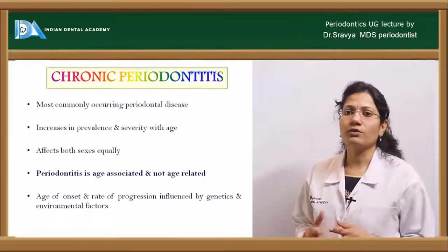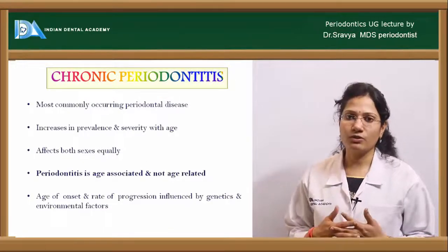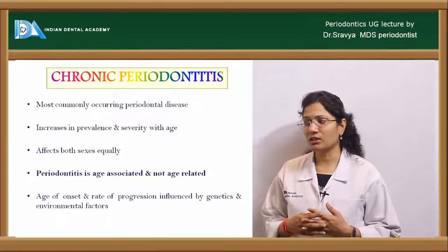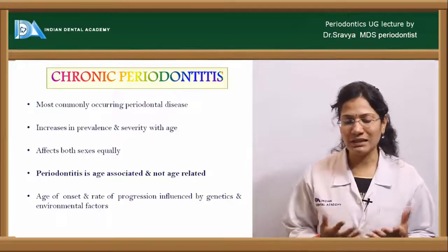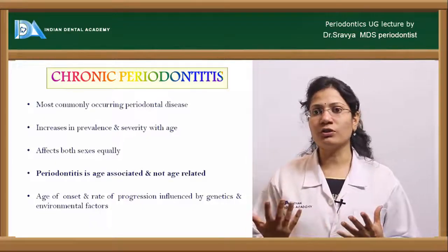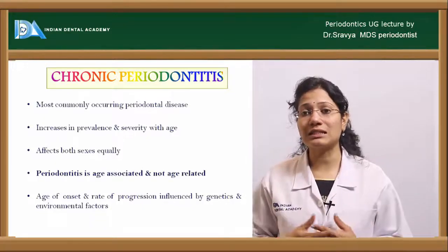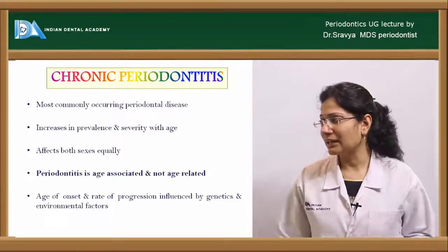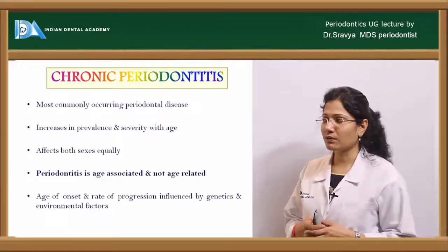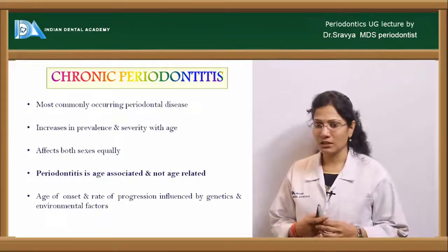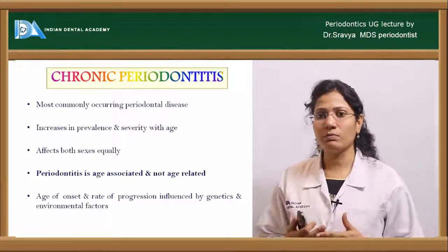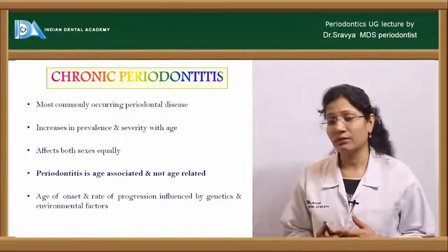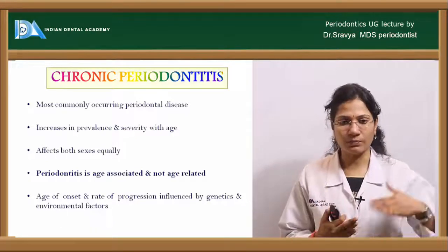Chronic periodontitis is one of the most prevalent forms of periodontal diseases, affecting at least 40 to 50 percent or more than 60 percent of individuals worldwide. Prevalence and disease severity increase with age. It affects both sexes equally.